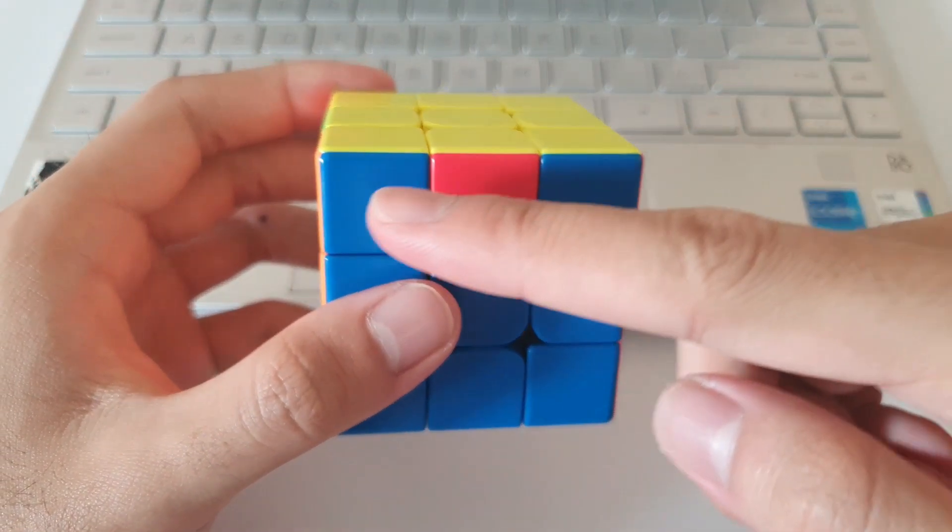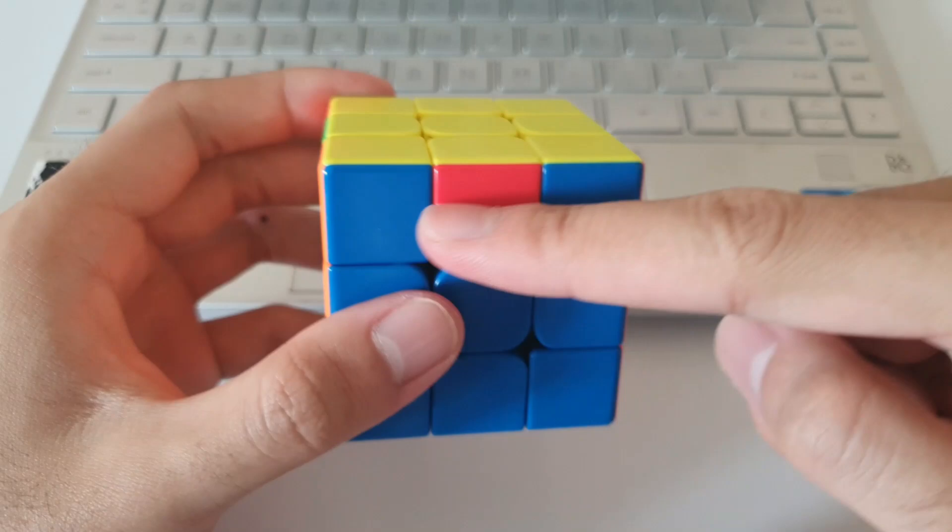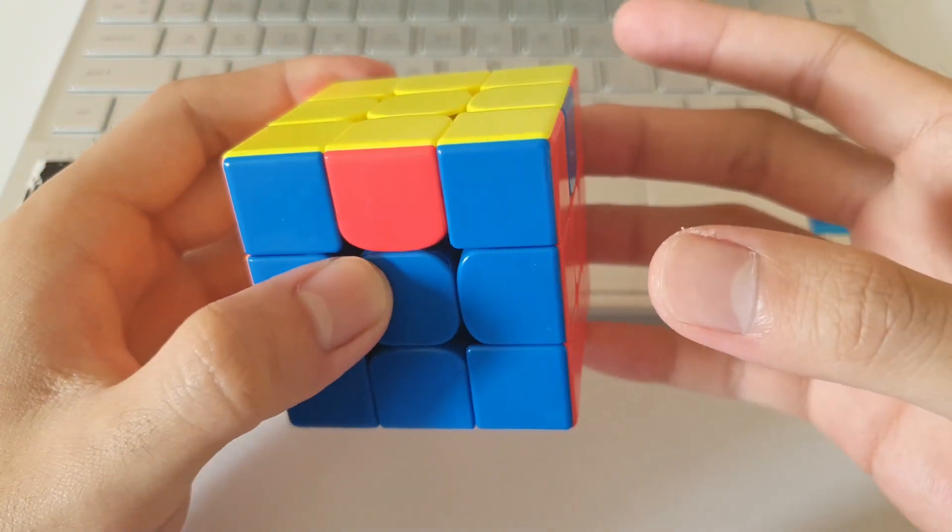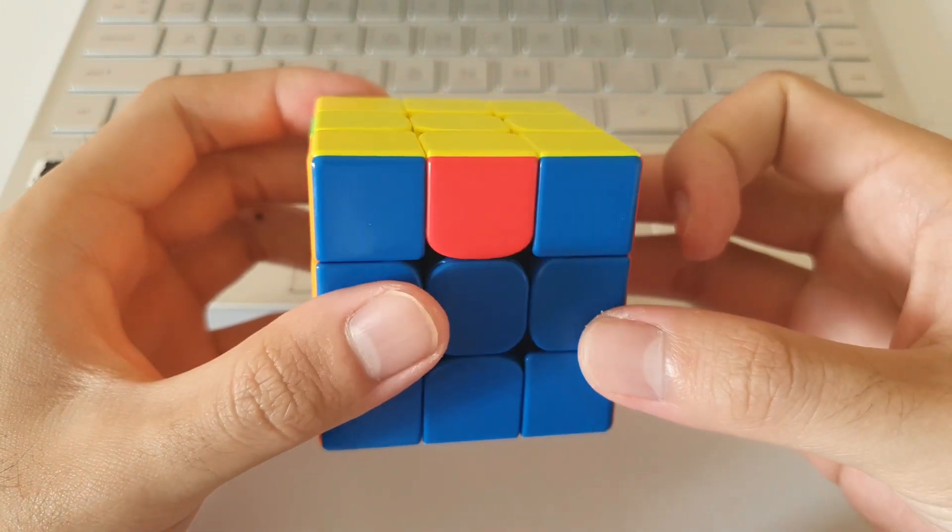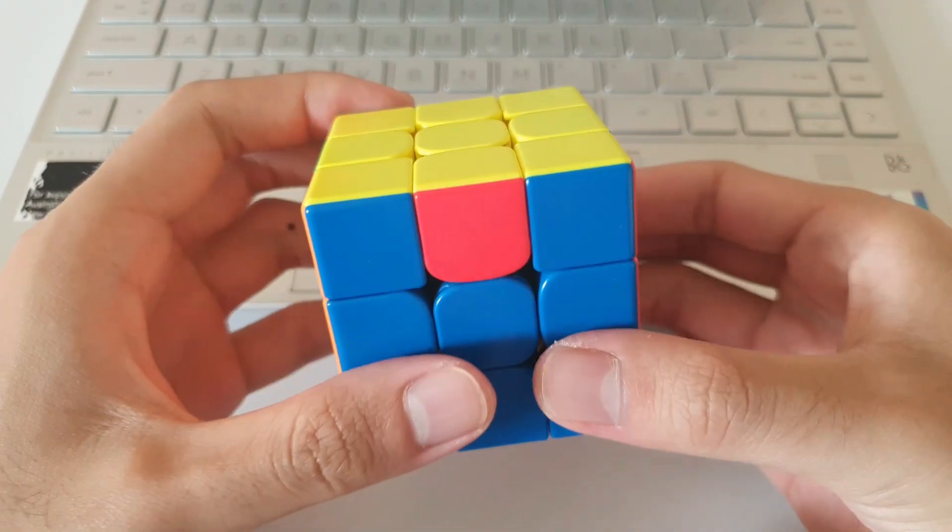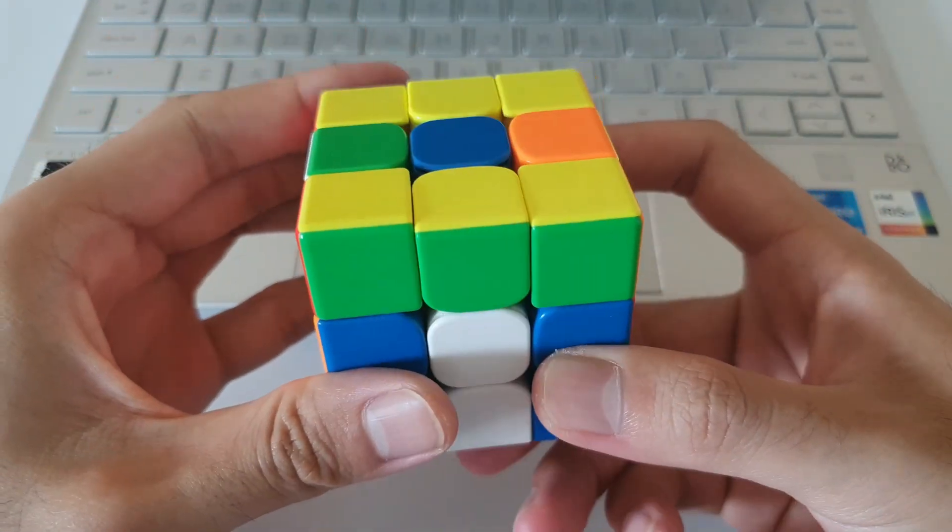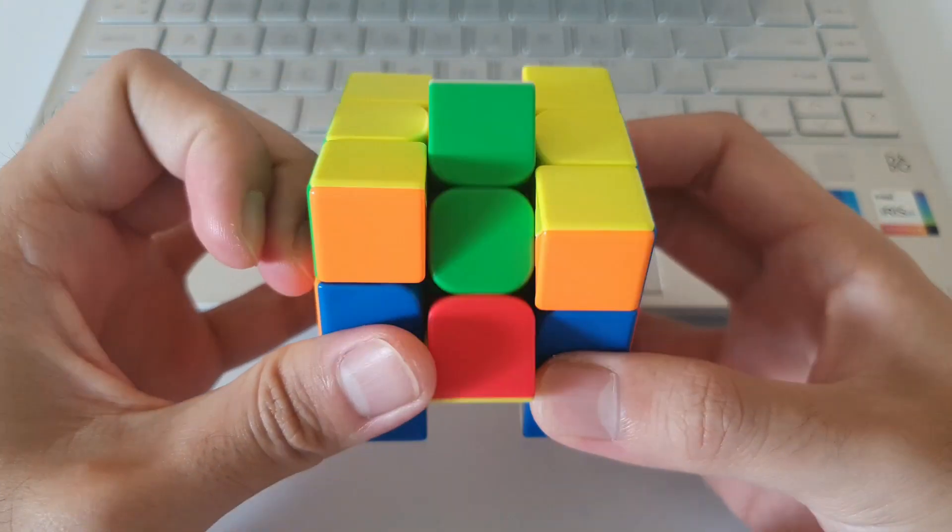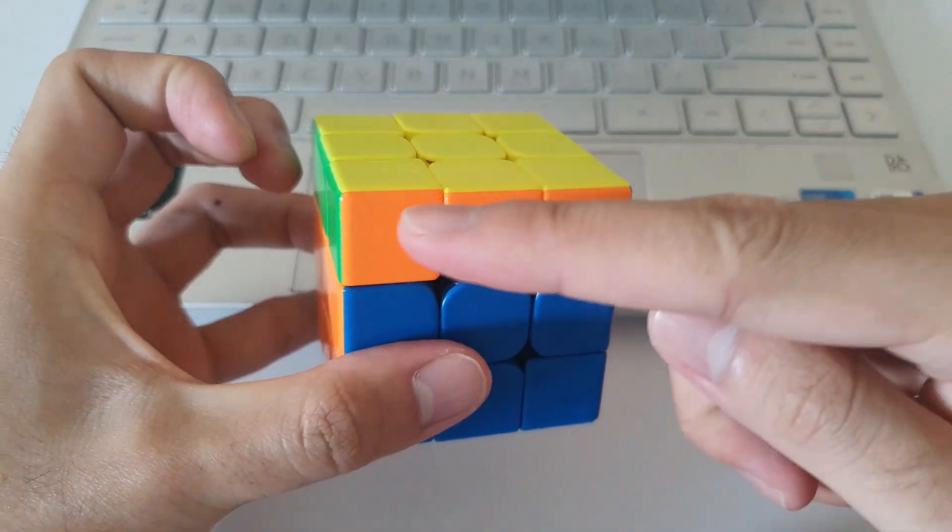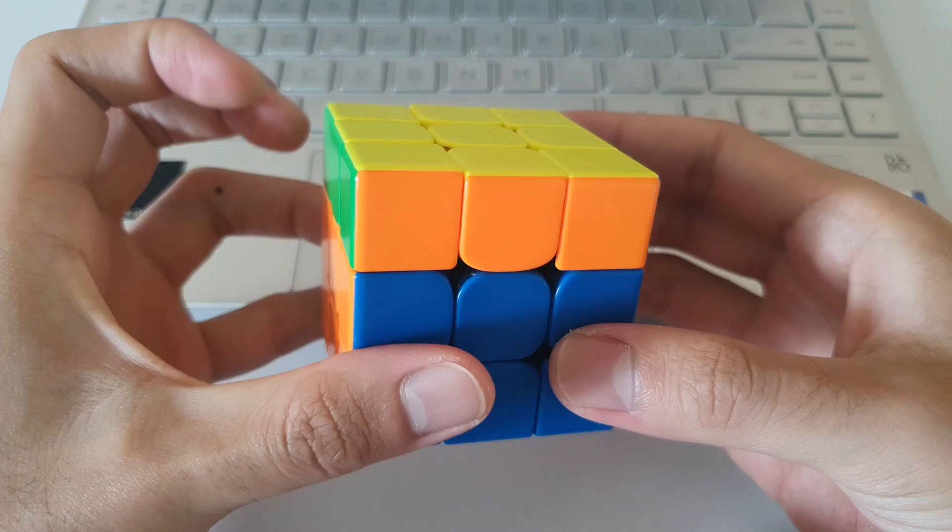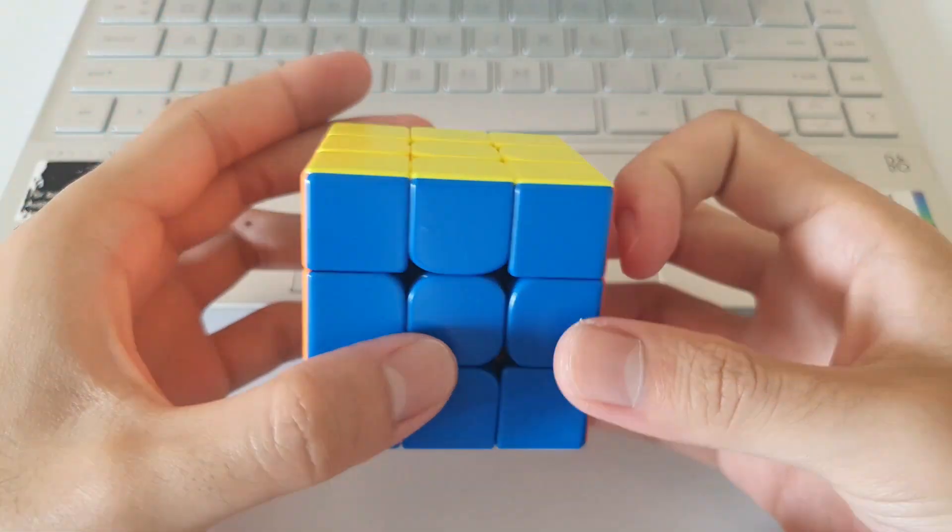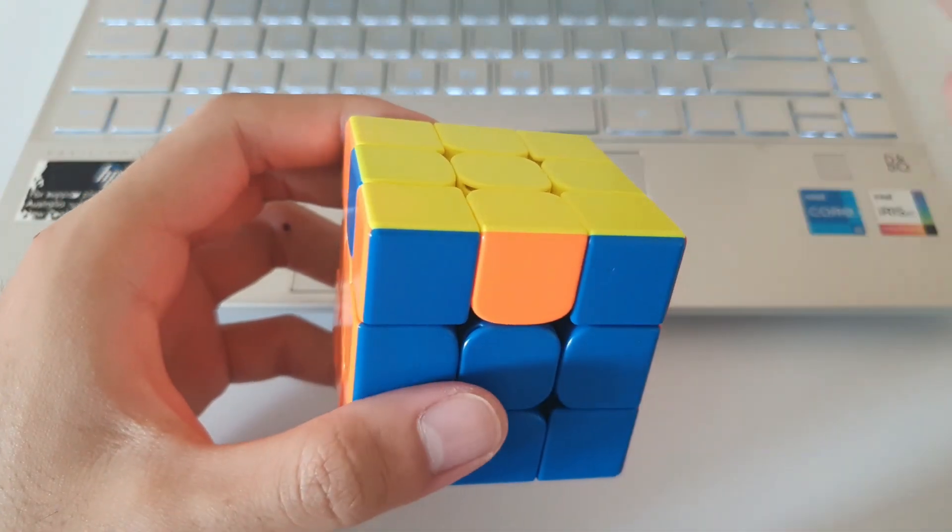Which means that after I do the M prime algorithm, orange will end up at the front here. So I have to do a U move to solve the cube. So it'll look something like this. Orange ends up at the front. So once again, I'll have to do a U move to solve AUF.